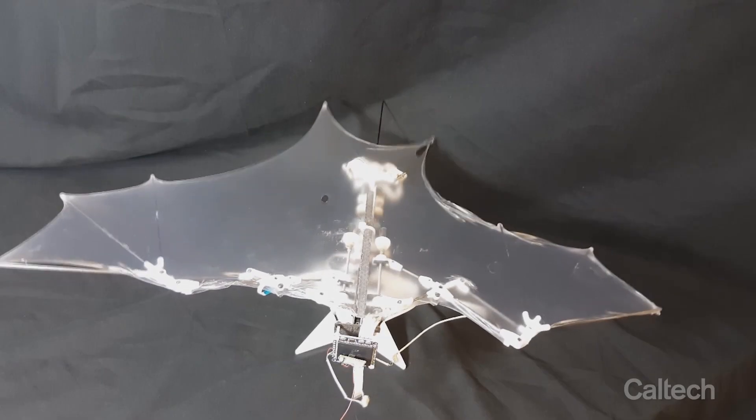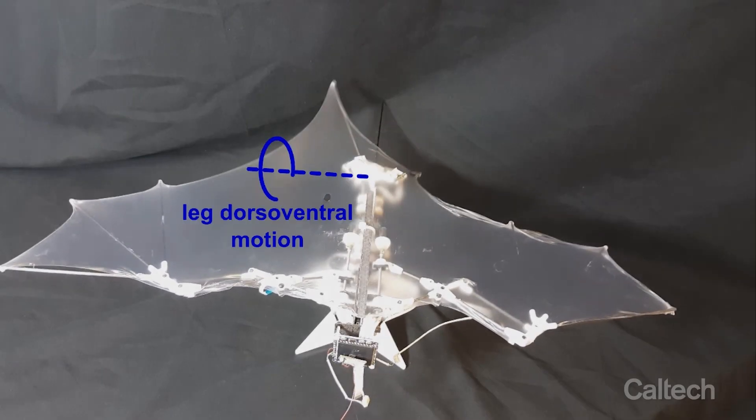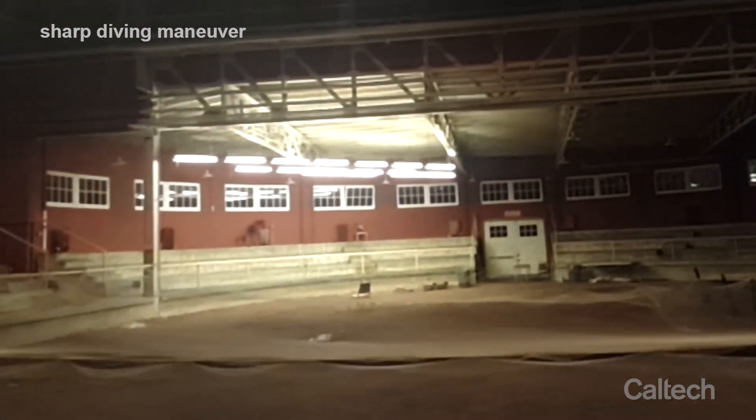B2's tail legs can be controlled independently. Sharp diving maneuvers performed by bats when they pursue their prey were reconstructed by moving the hind limbs or legs.